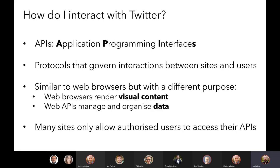APIs are really great and there are lots of them available. Many big websites — GitHub, Facebook, Twitter — all have APIs that enable users to interact with their data. However, the majority of those tend to be restricted, so not everybody can access all the data. You can't just log in and start harvesting data; you have to get permission.